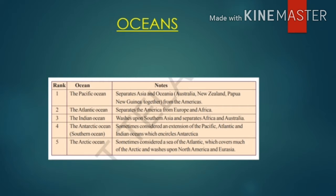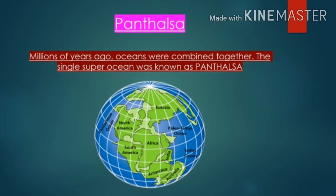One more interesting point: Panthalassa. Millions of years ago, all the oceans were combined together. That single super ocean was known as Panthalassa. In the picture, the blue color represents the complete area of all five oceans, which was previously called the single super ocean or Panthalassa.